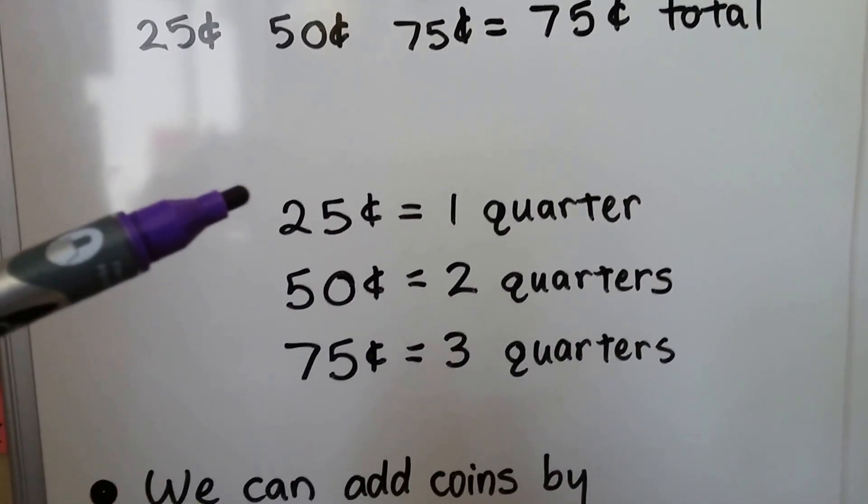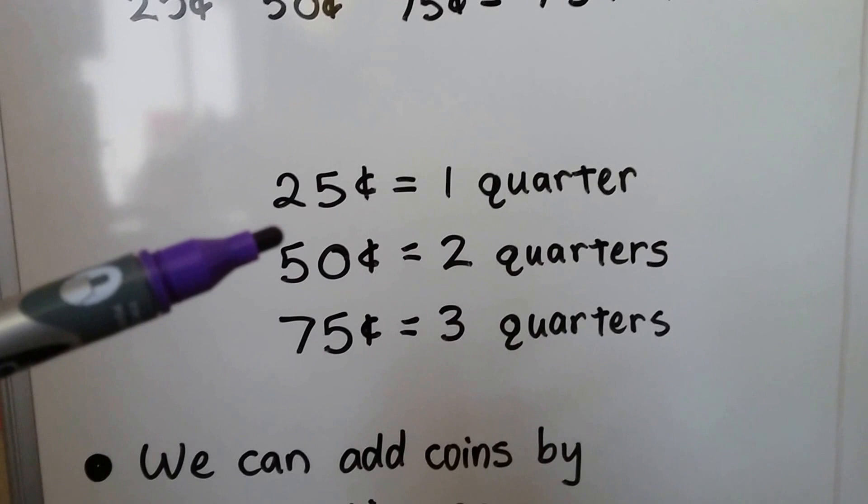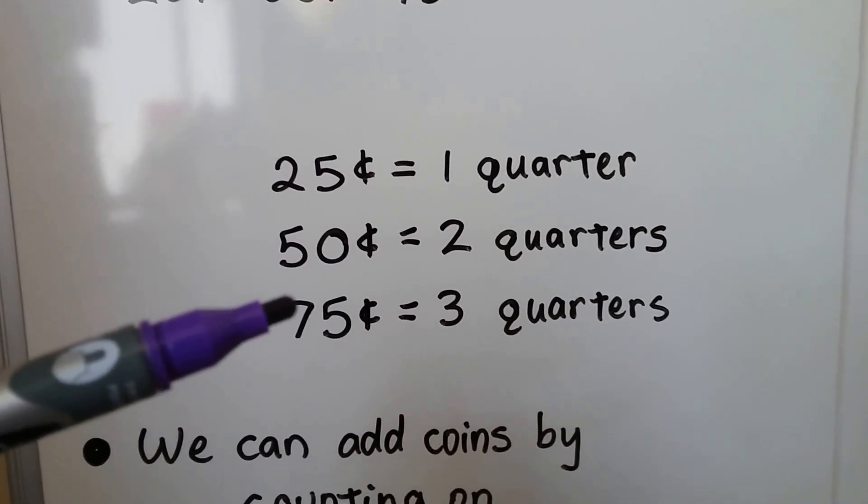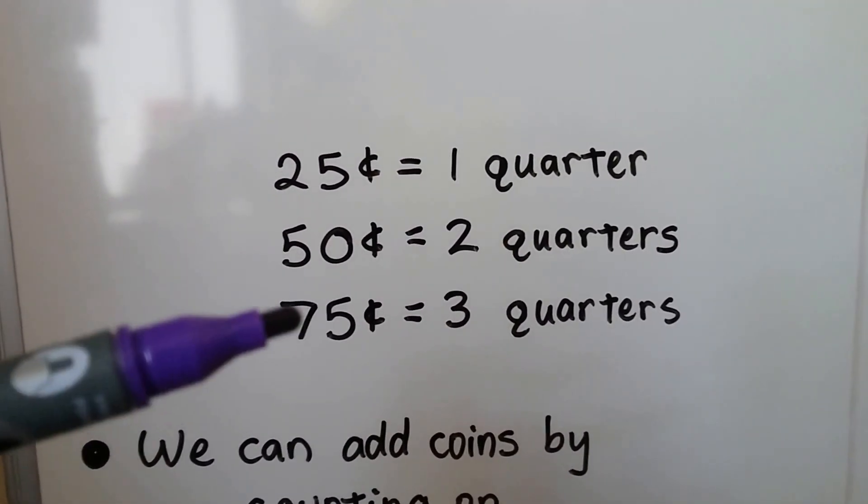25 cents is 1 quarter. 50 cents is 2 quarters. 75 cents is 3 quarters. 25, 50, 75.